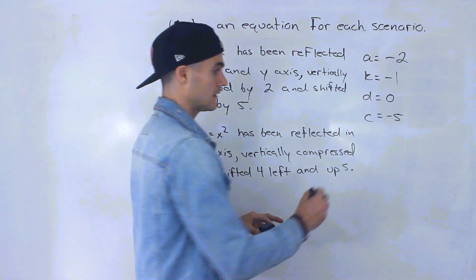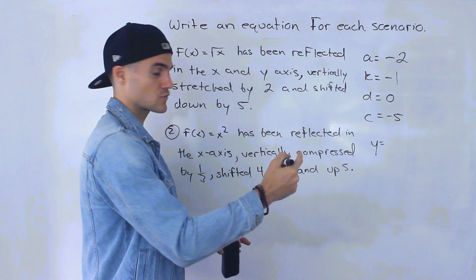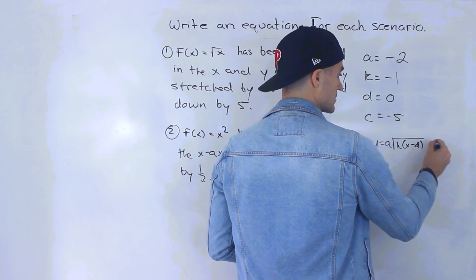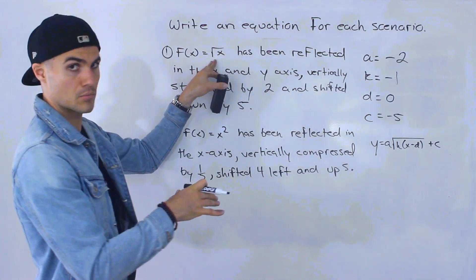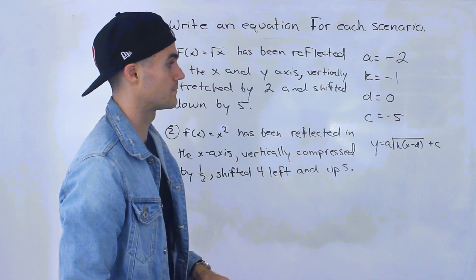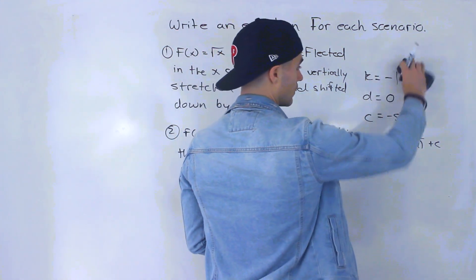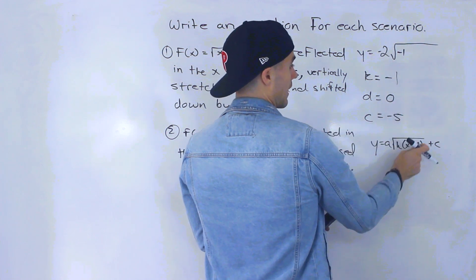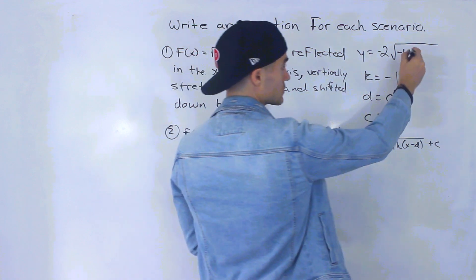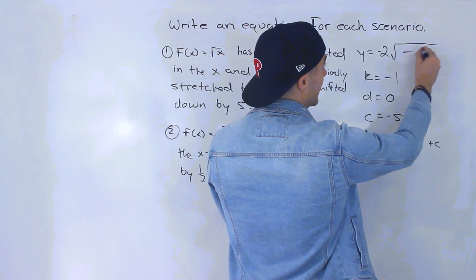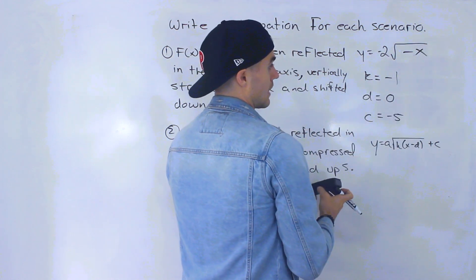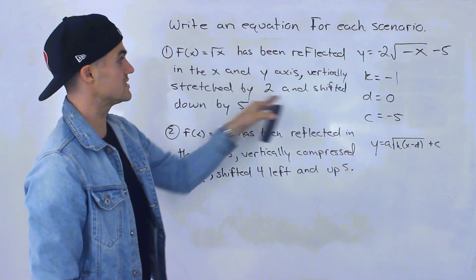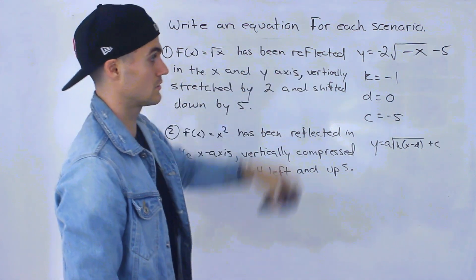Now we have all our transformation values and just have to plug them into the parent function √x. The general format is: a√(k(x − d)) + c. Plugging in: y equals negative 2 times the square root of negative 1 times x minus 0, plus c. Since k is negative 1 and d is 0, this simplifies to negative 2 times √(−x) minus 5. That is the equation for number one.